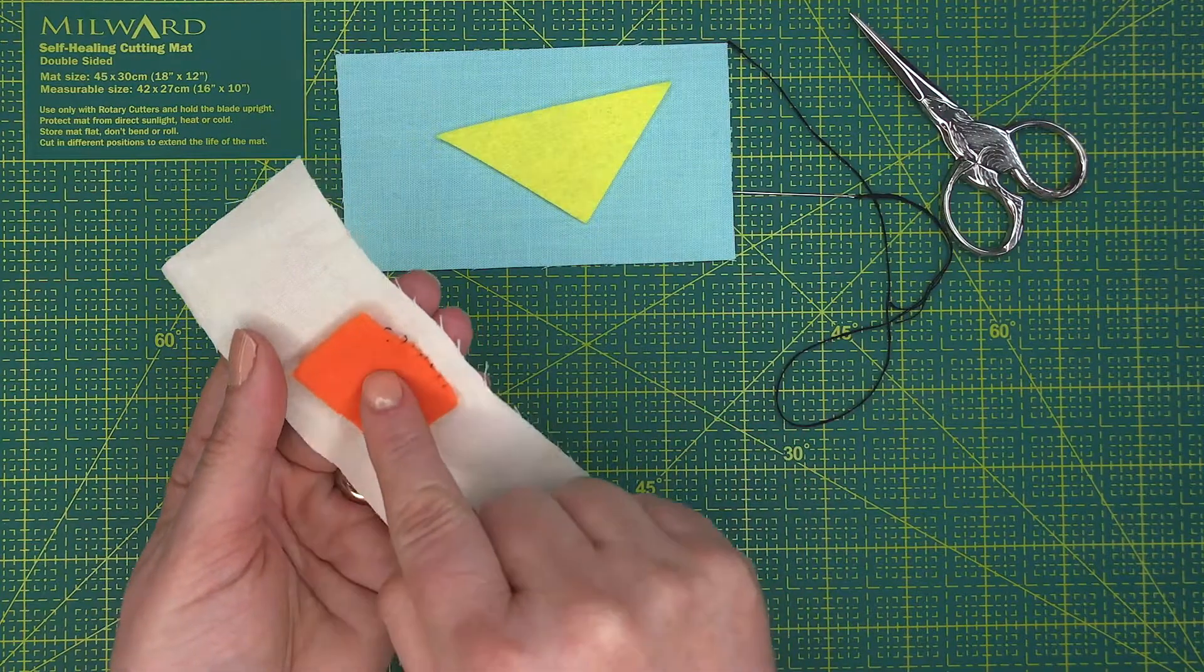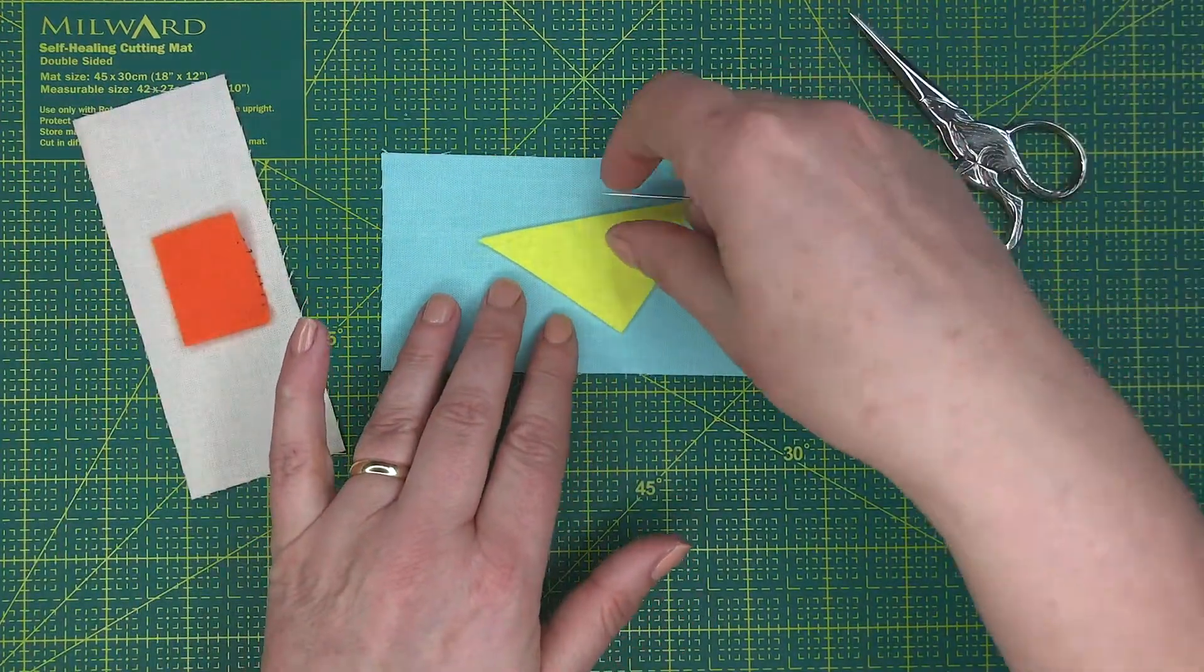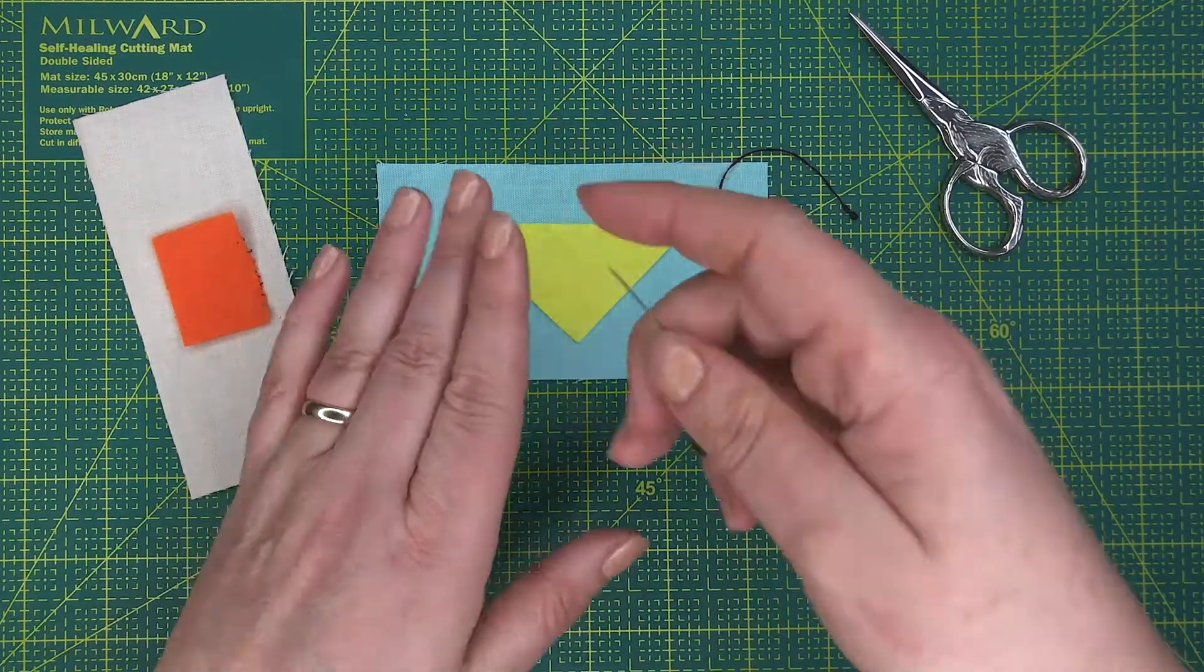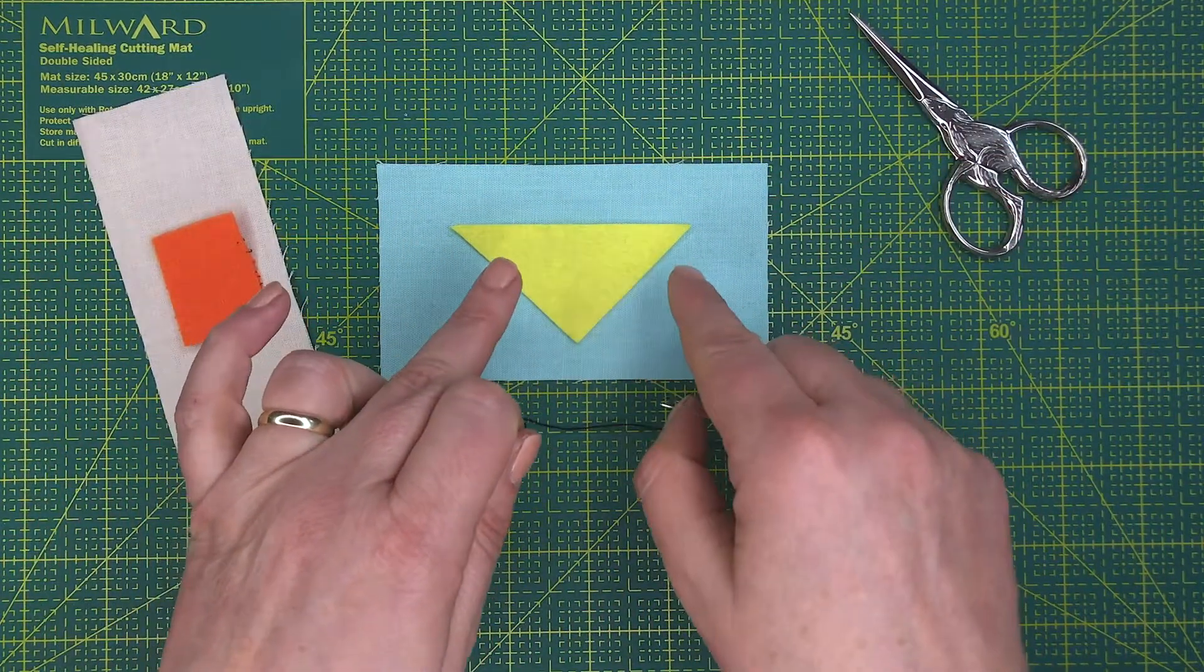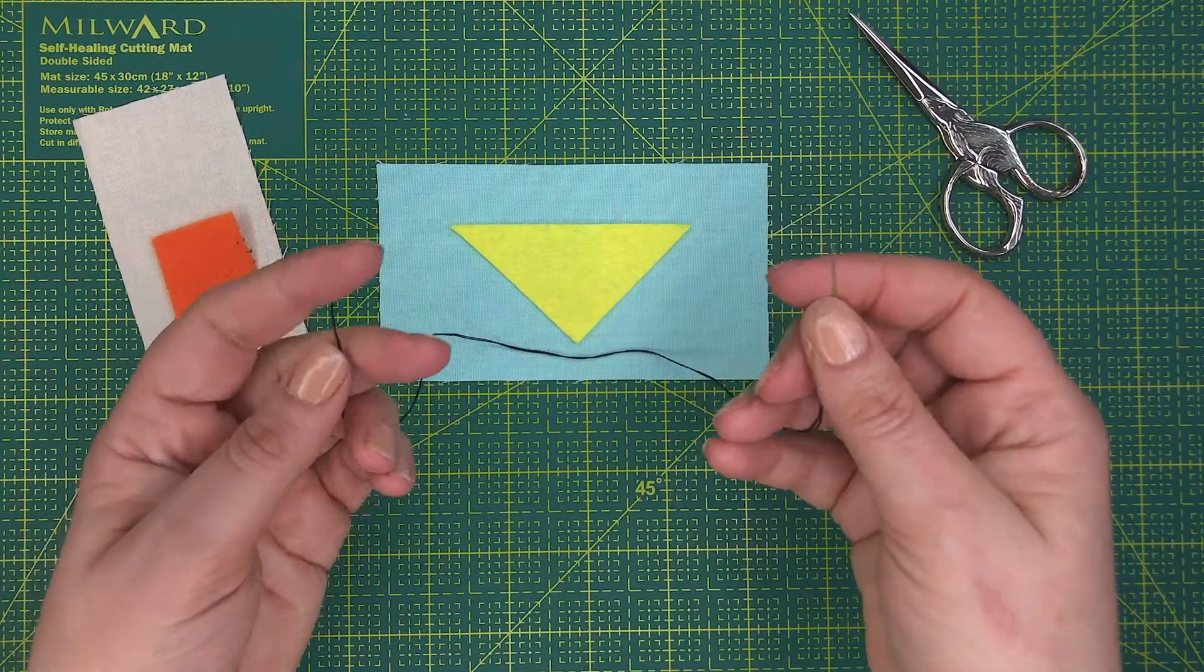Now to work this stitch, I'm going to be attaching this yellow onto the blue. Ordinarily I would use yellow thread if I wanted it to be invisible. If I didn't and I wanted to highlight the whip stitch applique, I would use black thread, which I have here.